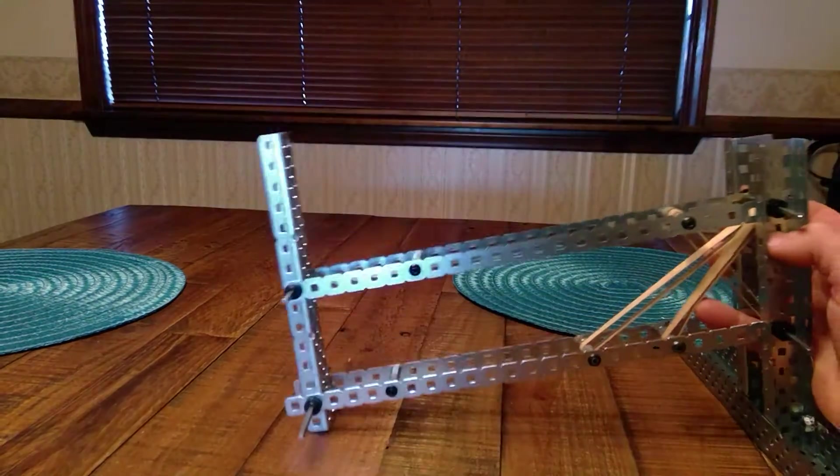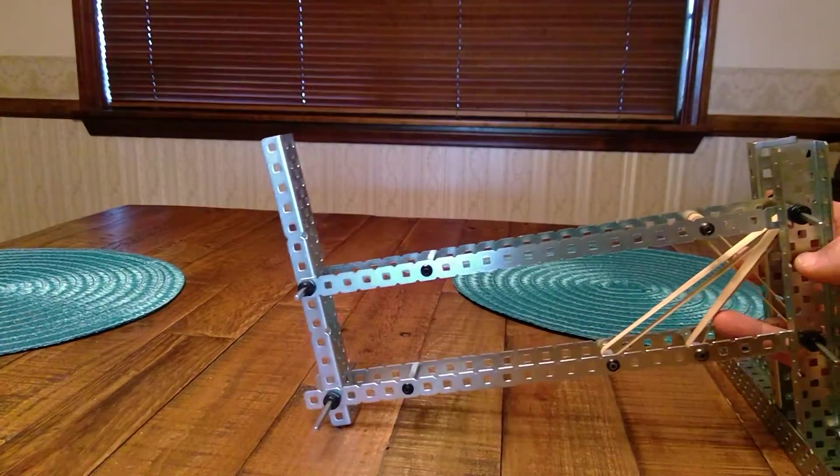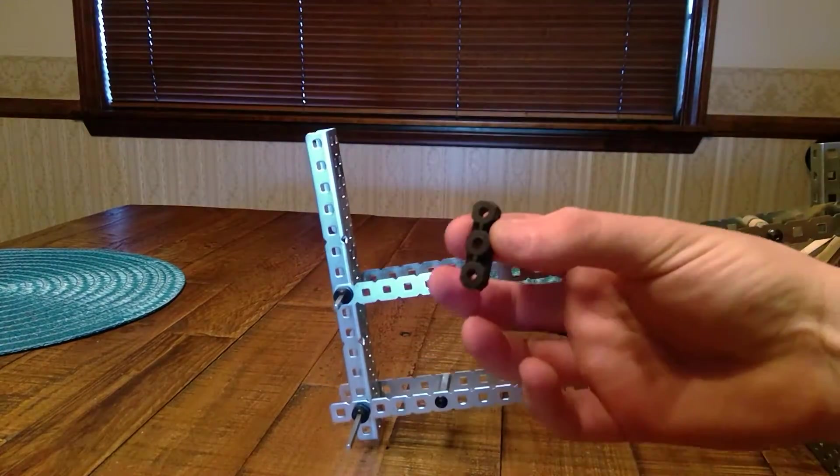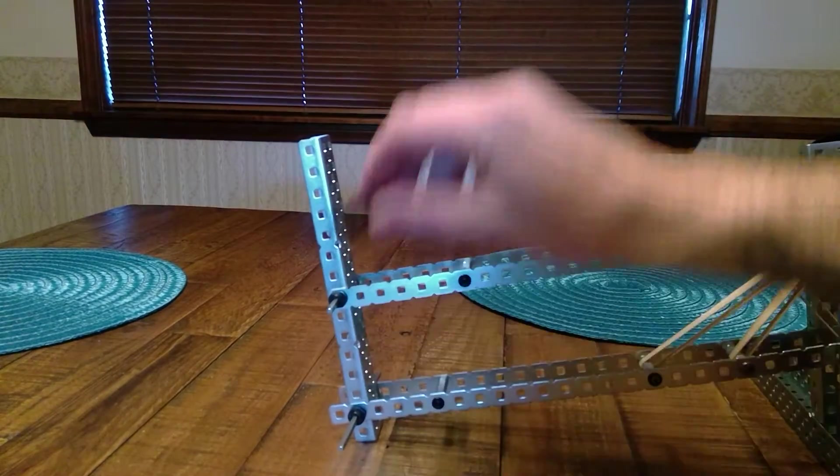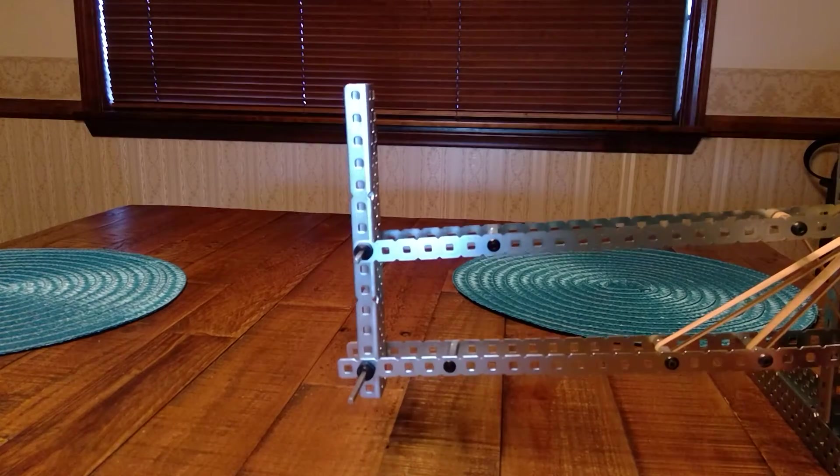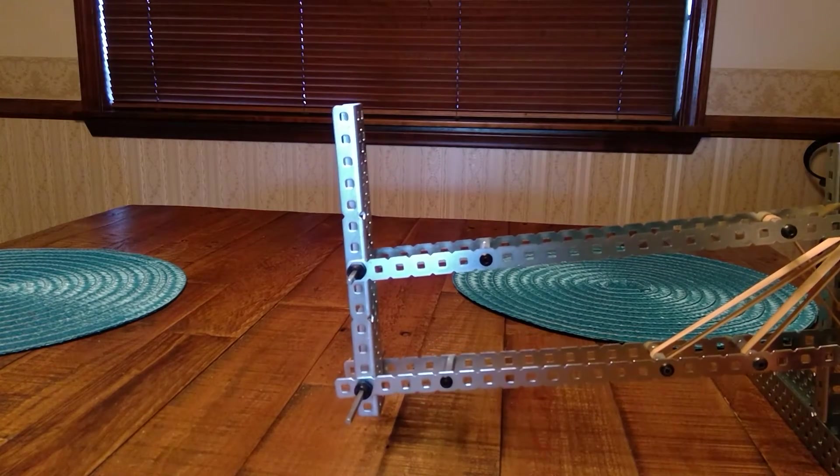Now, if we were actually going to use this on a robot, we'd need to use a bearing block every single place where we have an axle. So we need one here, here, here, here, here, here, here, and here, which means I need a grand total of eight.